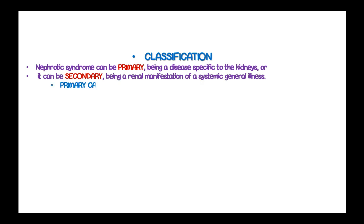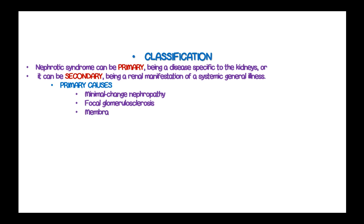The causes of primary nephrotic syndrome include minimal change nephropathy, which is the most common cause in children, focal glomerulosclerosis, membranous nephropathy, and hereditary nephropathies.